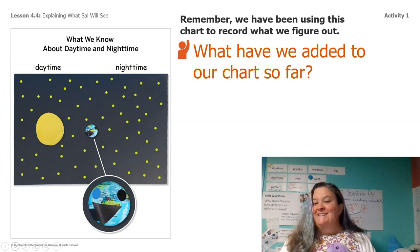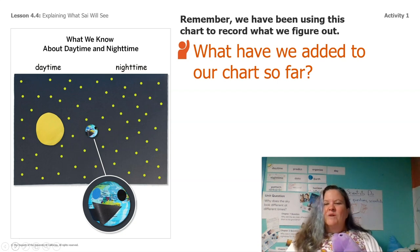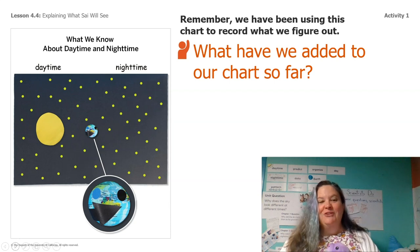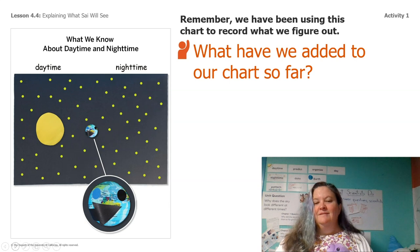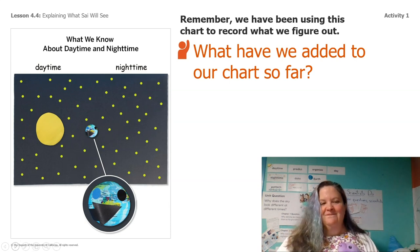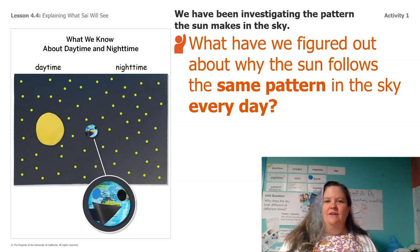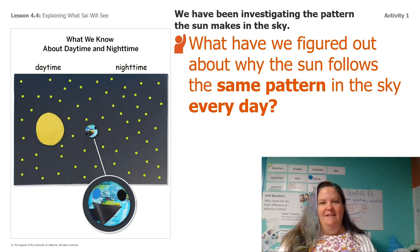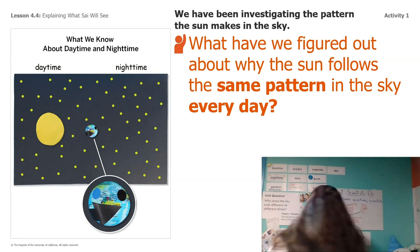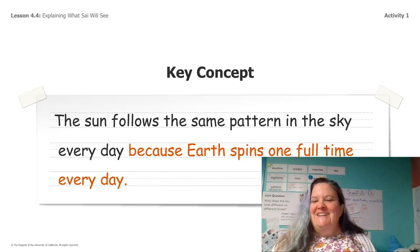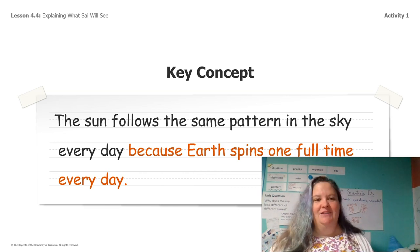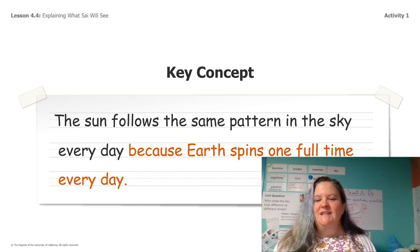Did somebody out there point to the sun? How about the stars? What is that arrow on there saying? Yeah, that the earth spins. Does anybody remember what the dots mean? What is the blue dot saying? What about the black dot? So if the blue dot tells us it's day and the black dot tells us it's nighttime, what have we figured out about why the sun follows the same pattern in the sky every day? What we've learned is that the sun follows the same pattern because the earth spins one full time every day.